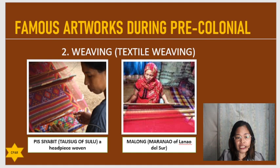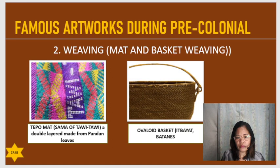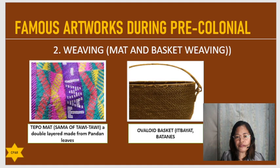Another form of weaving is the mat and basket weaving. In the first picture, we have the tipo mat of the Sama of Tawi-Tawi — a double-layered mat made from pandan leaves. We also have the ovaloid basket of Itbayat Batanes. These were the forms of mat and basket weaving during the pre-colonial times.